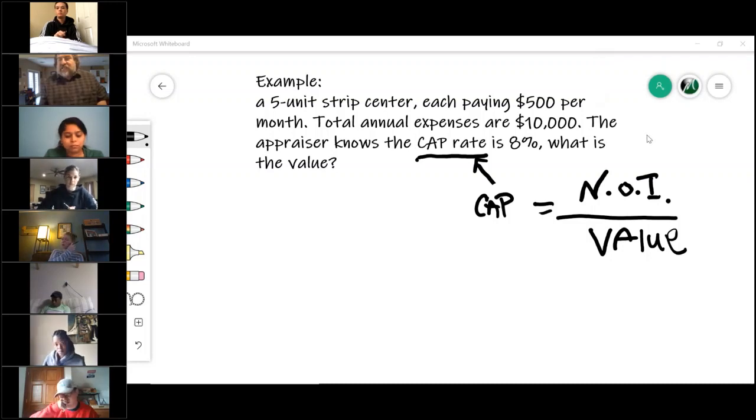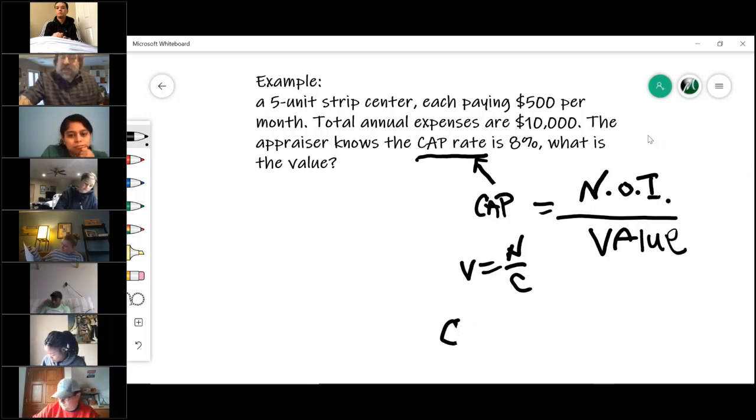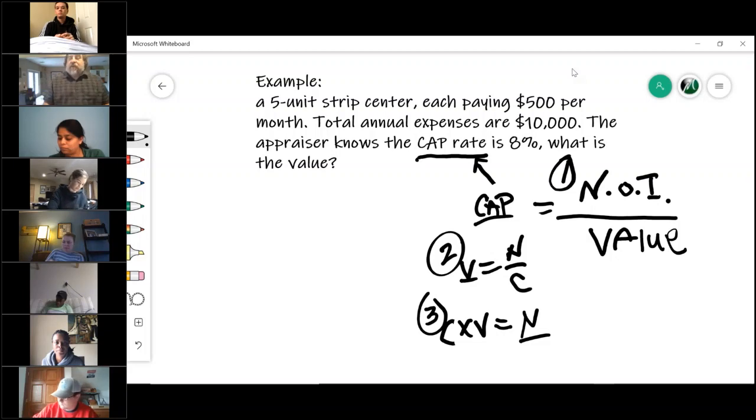Does everybody see that I can algebraically move this stuff around and say that the value is equal to the NOI over the cap rate, and the cap rate times the value equals the NOI? These are the same three equations, only written in a different form. Here we're looking for the cap rate, here we're looking for the value, here we're looking for the NOI. Does everybody see those algebraically? Know how to move them around?